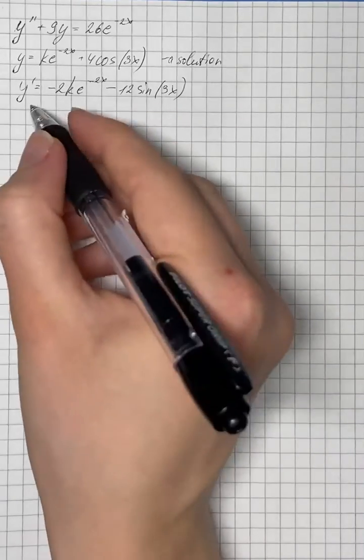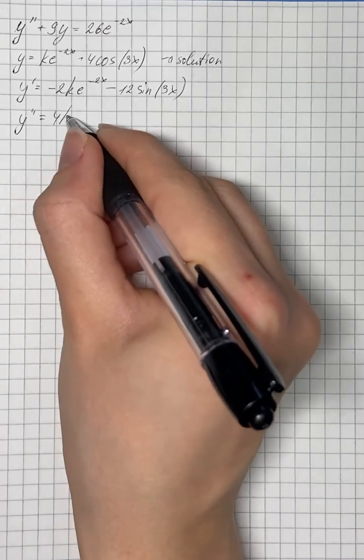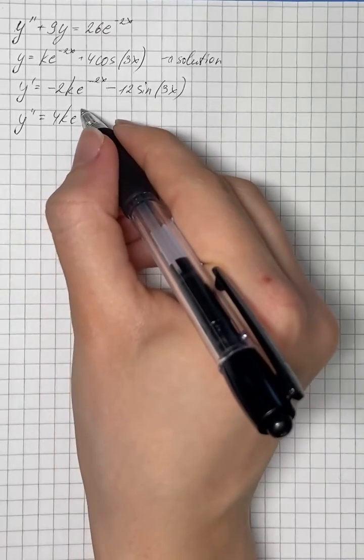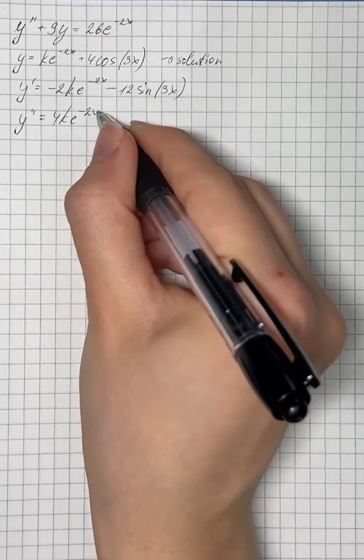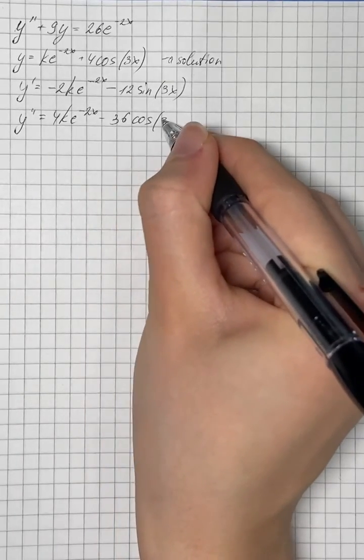Now we're going to differentiate it again and find second derivative which is equals to 4k e to the power of negative 2x minus 36 cosine of 3x.